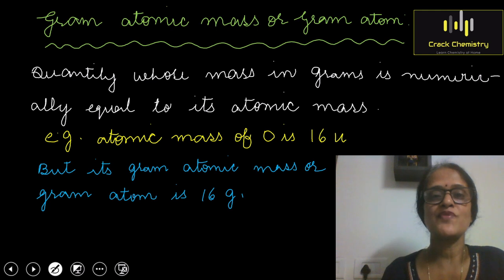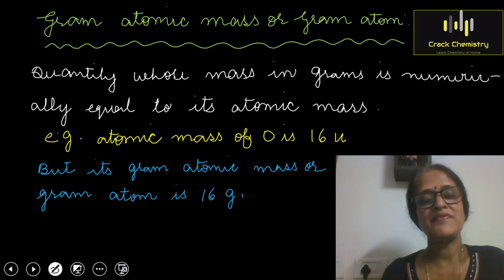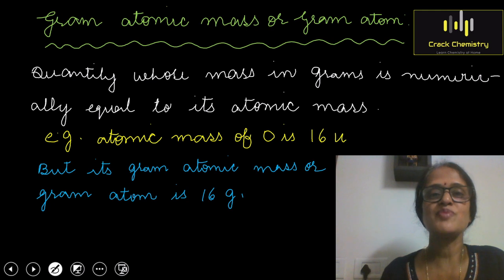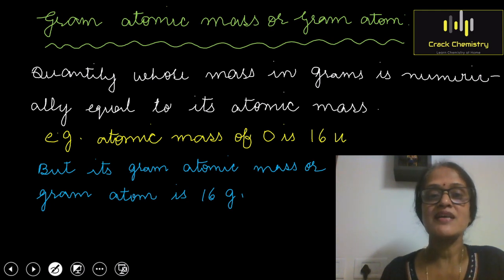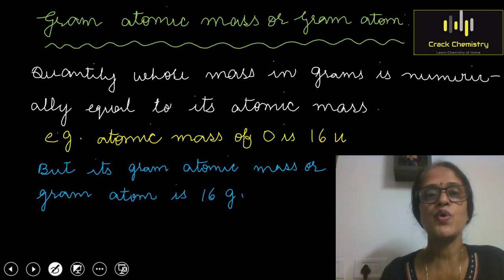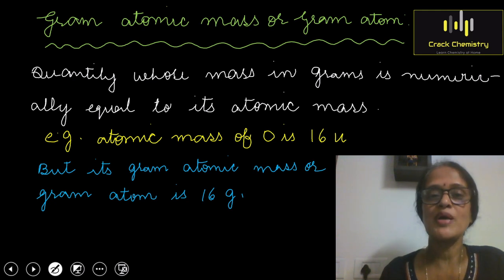For example, the atomic mass of an oxygen atom is 16 U, and we can say that its Gram Atom or Gram Atomic Mass is 16 grams. Similarly, the atomic mass of a hydrogen atom is 1.008 U, and its Gram Atomic Mass or Gram Atom is 1.008 grams.